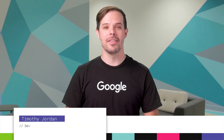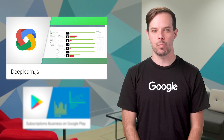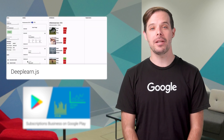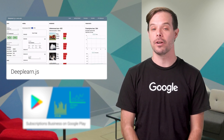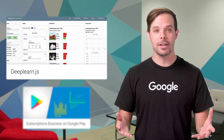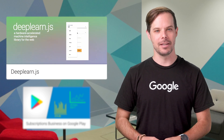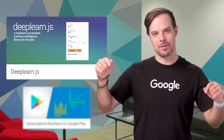Hello, I'm Timothy Jordan, and this is your update about the coolest developer news from Google in the last week. deeplearn.js is an open source WebGL-accelerated JavaScript library for machine learning that runs entirely in your browser with no installation and no backend. Some cool screenshots and links for getting started are on the post linked in the description below.